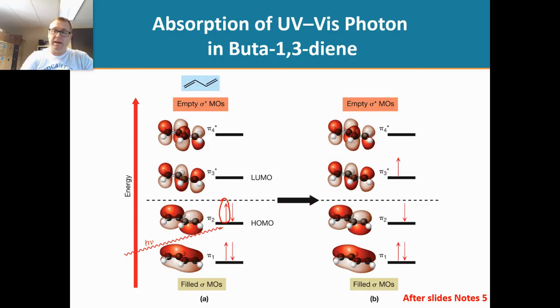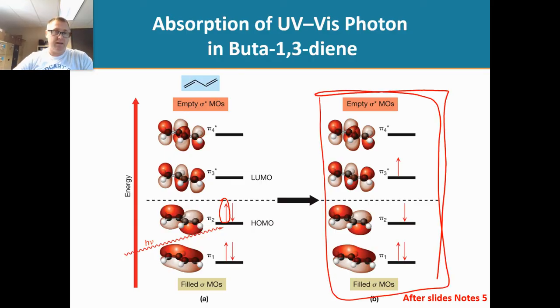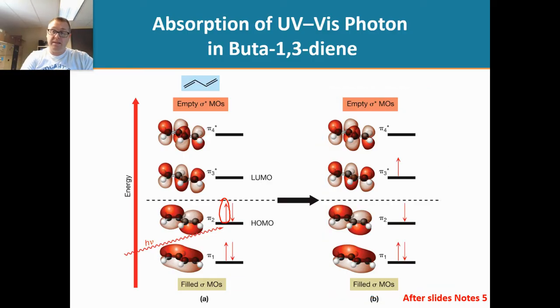And so, now in this state here, this would be the excited state. And it has absorbed some energy. It absorbed a photon of light. But this is an excited state, and so the molecule is not going to stay like this forever. So when the molecule relaxes back down, what happens is this electron relaxes back down.